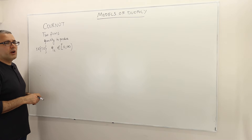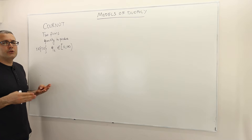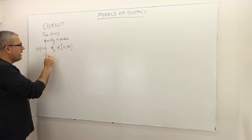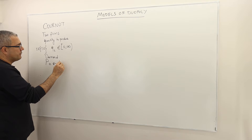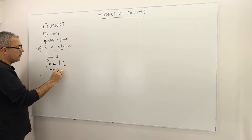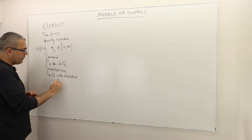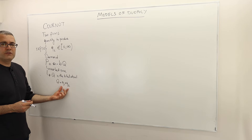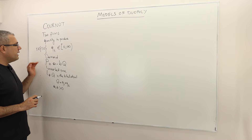In real life, firms not only choose their quantities but also their prices. But in this market environment we assume firms only choose how much to produce. The market price is determined by the market clearing condition, or by the demand curve. The inverse demand is given by p equals a minus b times q, where p is the market price and q is the total output, equal to quantity of firm one plus quantity of firm two, and a and b are positive real numbers.